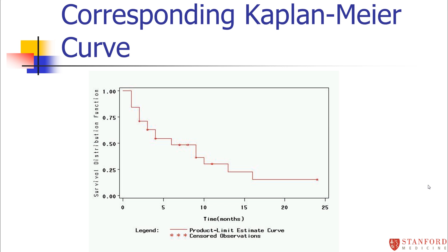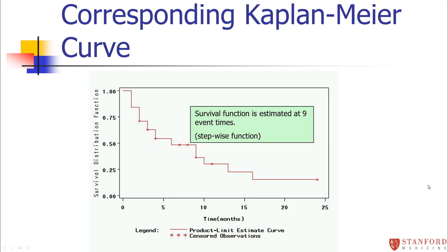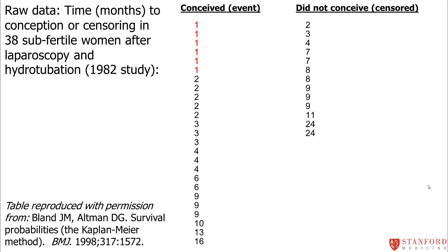Here's the Kaplan-Meier curve that corresponds to these data. Everywhere you see a little star, that's where a woman was censored — she dropped out of the study before she became pregnant. We start at 100% and it drops down from there. The survival function is a stepwise function with nine event times — nine unique steps on this curve that define the survival probabilities. We only define the survival probabilities where we actually see events. A computer will do this for you, but it's nice to understand what's going on.